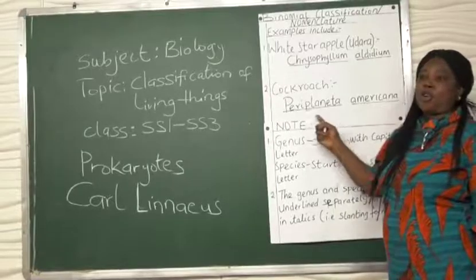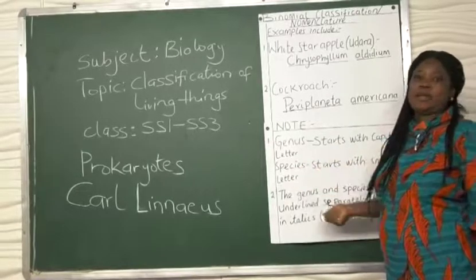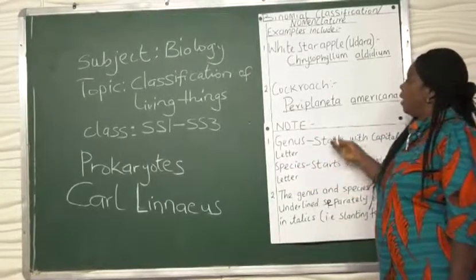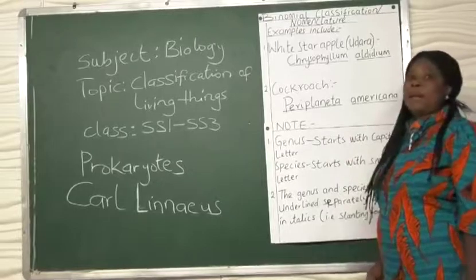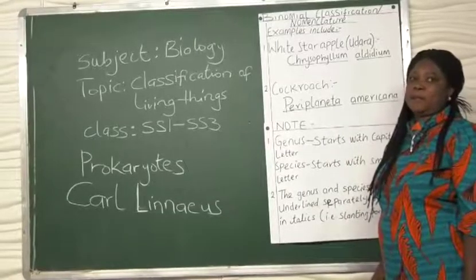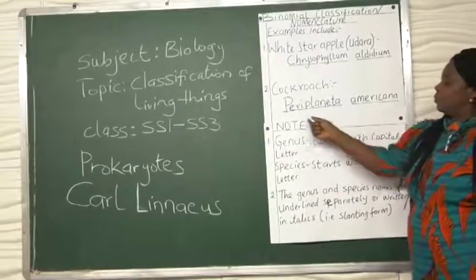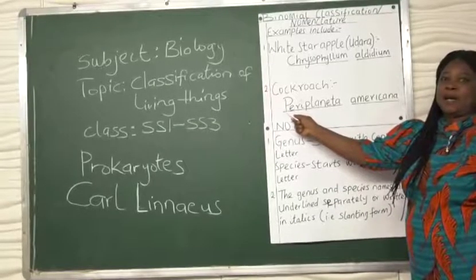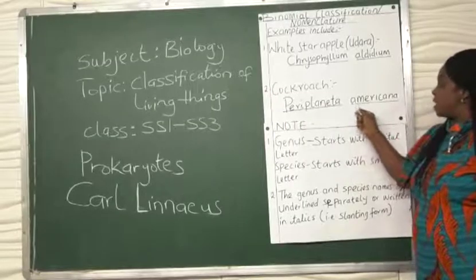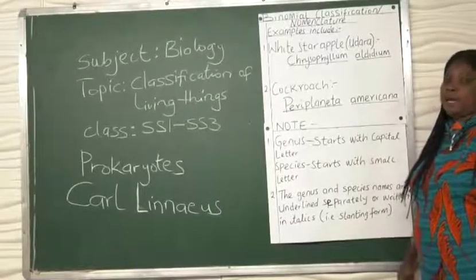The cockroach that is common around us is known as Periplaneta americana. You notice that the genus name starts with capital letter and the species name starts with small letter.